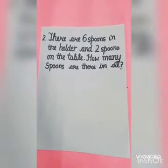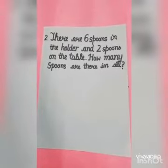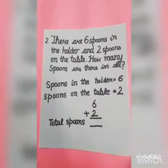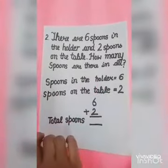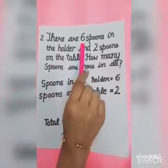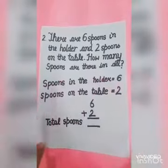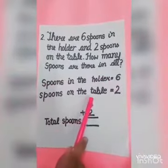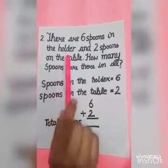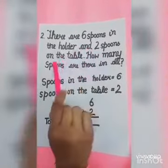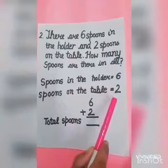Here also, we have to find out the total number of spoons. Now we will write spoons in the holder. How many spoons are there in the holder? 6. So we will write here 6. Then spoons on the table — there are 2 spoons on the table. So we will write here 2.